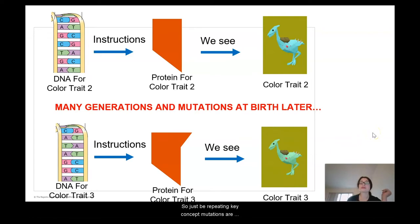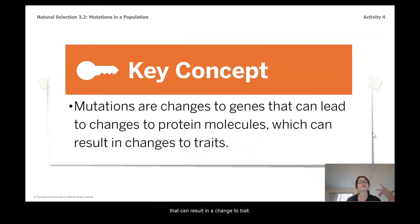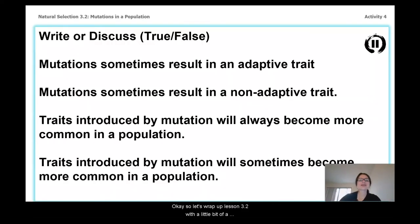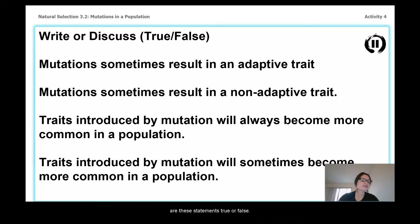Worth repeating — key concepts: mutations are changes to genes that can change the protein molecules, which can result in a change to a trait. And mutations to genes can sometimes introduce new traits to a population. Let's wrap up lesson 3.2 with a true-false game, and then we're going to respond to everyone's favorite jelly bean, Mr. Sherman. Spend a moment, press pause, and ask yourself if these statements are true or false.